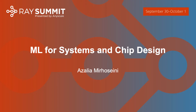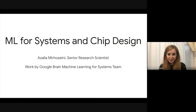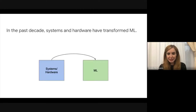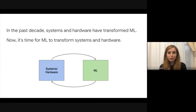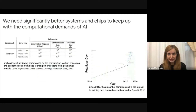Hello, I'm very excited to be here and talk about some of the work that my colleagues and I have been doing in Google Brain's Machine Learning for Systems team. Our motivation is that in the past decade, systems and hardware have truly transformed machine learning, and it is now time for machine learning to return the favor and transform the way systems and hardware are designed.